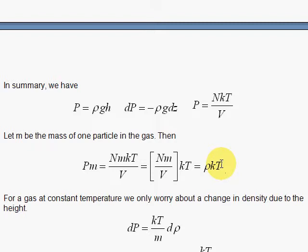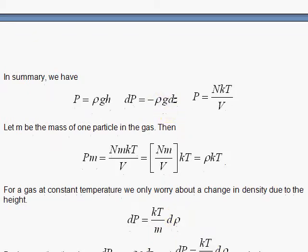The effect of pressure on a gas, then I have KT divided by M, and I have D rho. So now I'm going to set the DPs equal to each other and solve the differential equation to get rho as a function of Z. That's the idea.